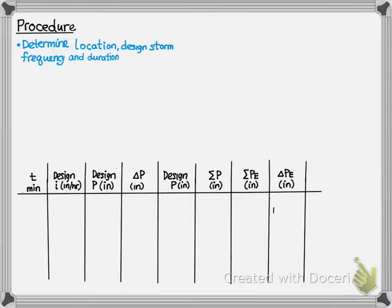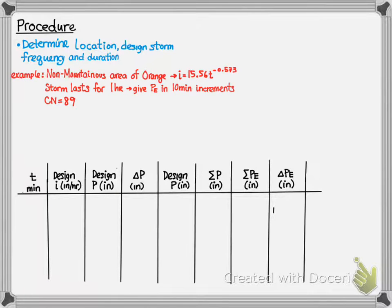So, the procedure. First, we need to determine a location, a design storm, and a frequency. For this example, let's assume we're in the non-mountainous areas of Orange County. And we're given an intensity equation as follows: I equals 15.56 T raised to the negative 0.573 power. The storm lasts for one hour,